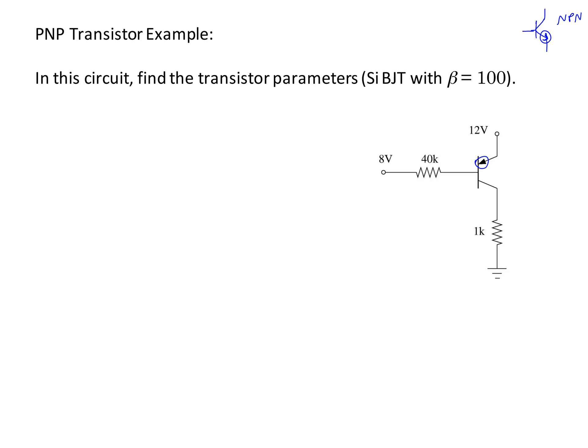First we need to label the terminals and then label the currents and voltages. This is my emitter — the arrow is on the emitter — this is my collector, and this is my base. The emitter current enters the device, the collector current leaves the device, and I base also leaves the device. I'll label V_EB (voltage from emitter to base) and V_EC (voltage from emitter to collector). You don't need to worry about the base-collector voltage because using KVL you can write V_BC in terms of V_EB and V_EC.